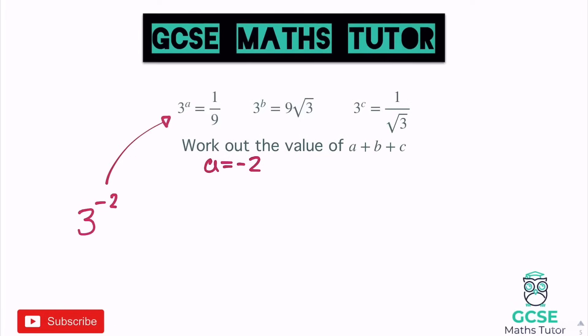Skipping to c for now since it looks more manageable: 3 to the power of c equals 1 over root 3. It's 1 over again, so it's 3 to the power of minus something. The 3 hasn't grown bigger — it's become a square root, so it's going to be a fraction. The square root means a 2 on the bottom, and the minus is because it's flipped over. So c equals minus a half.